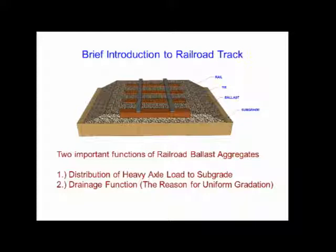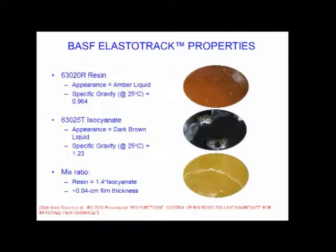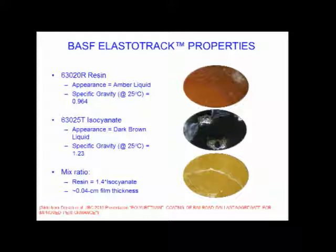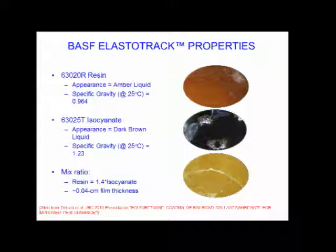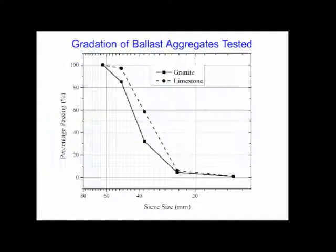Why are we using polyurethane? Shear strength is very important for the ballast layer because when heavy axle loads are applied, ballast particles tend to laterally displace. In some problematic railroad track positions this is becoming a real problem, even causing derailments due to settlements. To increase shear strength, BSF produces a polyurethane polymer material that increases shear strength via bonding. It has two components, called Elastotrack, and the mixing ratio is resin equals 1.4 isocyanate.